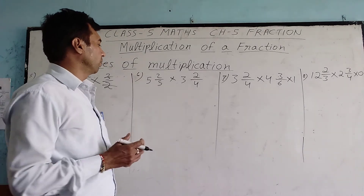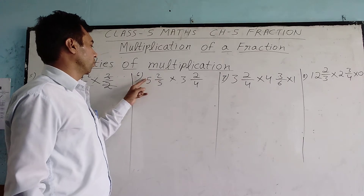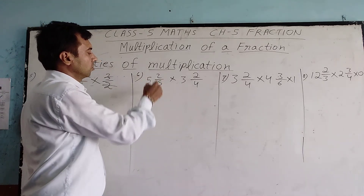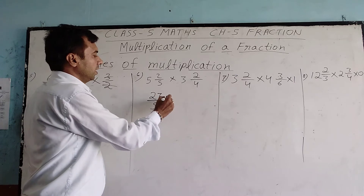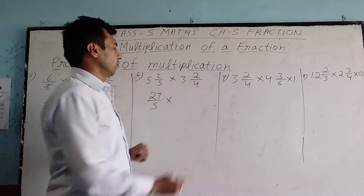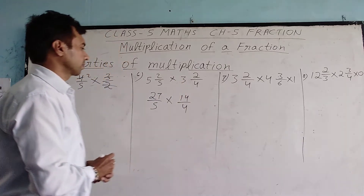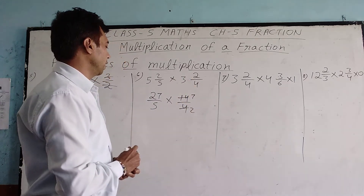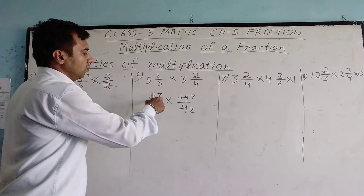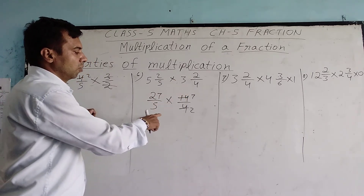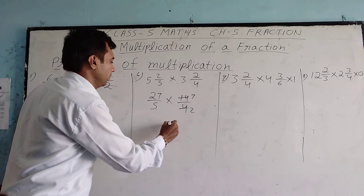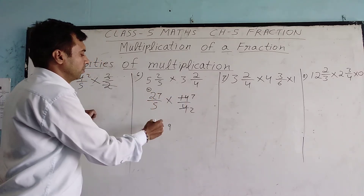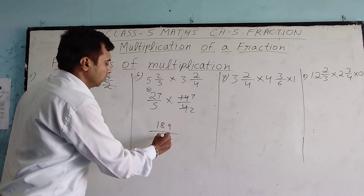Now we convert this mixed fraction into an improper fraction. We multiply the denominator by the whole number and add the numerator. 5 multiplied by 5 is 25, plus 27 gives us 27 by 5 multiplied by 2 by 4. We get 14 by 4. We can reduce this: 2 goes into 14 giving 7, and 2 goes into 4 giving 2. So we get 7 by 2. We cannot reduce further, so we multiply: 7 by 7 gives 49. Then 5 multiplied by 10 equals 50 in the denominator.